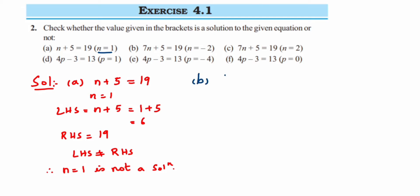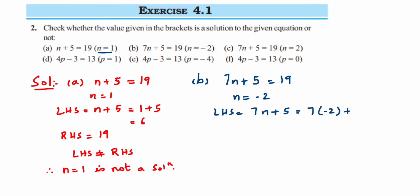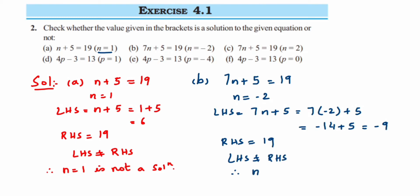In the second one, we have 7n plus 5 is equal to 19, and the n value is minus 2. LHS is 7n plus 5 — substitute: 7 times minus 2 plus 5, which is minus 14 plus 5, giving us minus 9. But RHS is equal to 19. Since minus 9 and 19 are not equal, LHS is not equal to RHS, so n=-2 is not a solution.